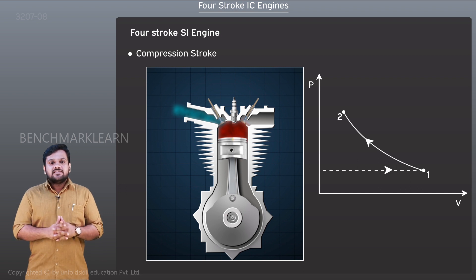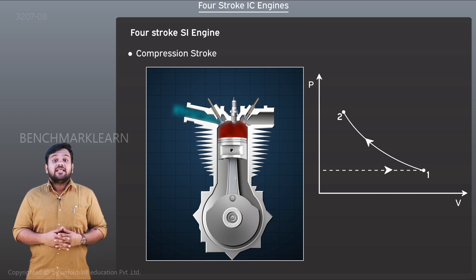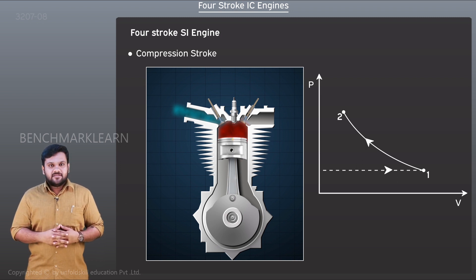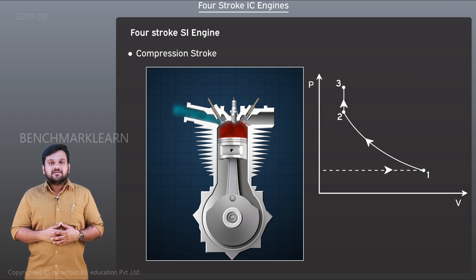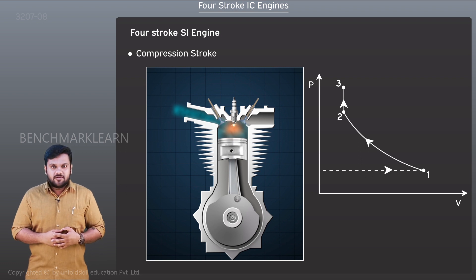In the PV diagram, the pressure increases abruptly and the volume decreases simultaneously during compression. The process two to three represents constant volume heat addition. This is achieved with the help of a spark plug, which introduces a spark into the cylinder at the end of the compression stroke.